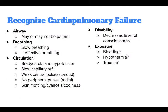To recognize cardiopulmonary failure, follow the A, B, C, D, E's. Airway may or may not be patent. Breathing could be slow or ineffective. Circulation may include bradycardia and hypotension, slow capillary refill, weak central pulses in the carotid, no peripheral pulses or radial pulse, or skin mottling, cyanosis, or coolness. For disability, there may be decreased level of consciousness. For exposure, there could be bleeding, hypothermia, or trauma.